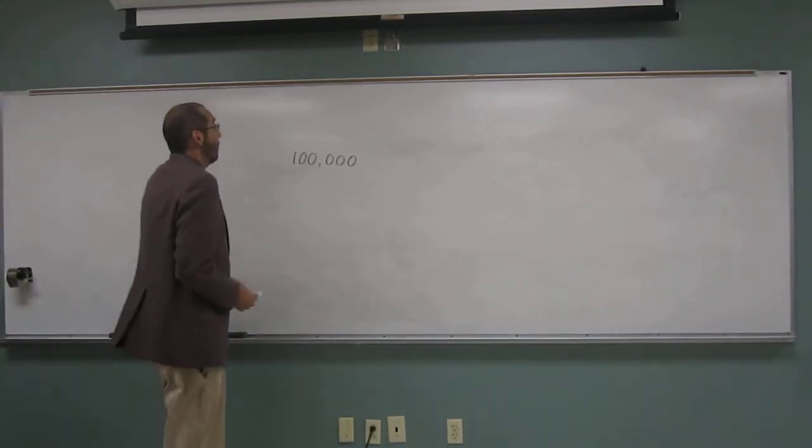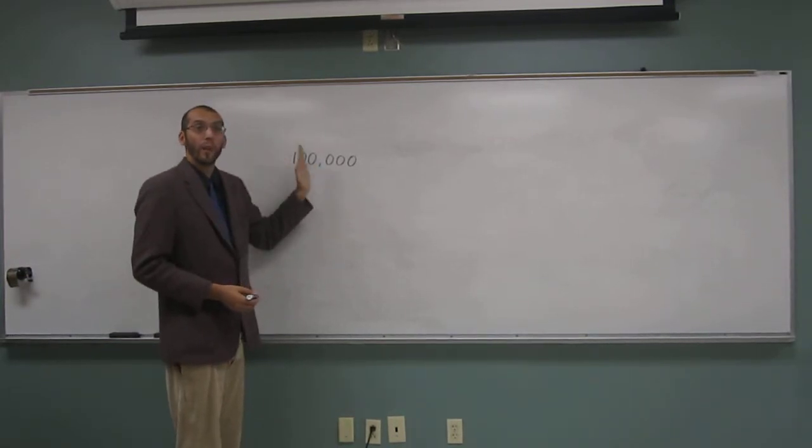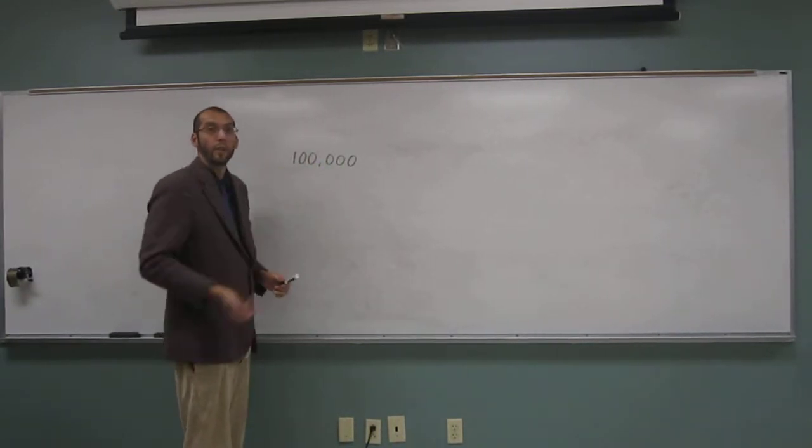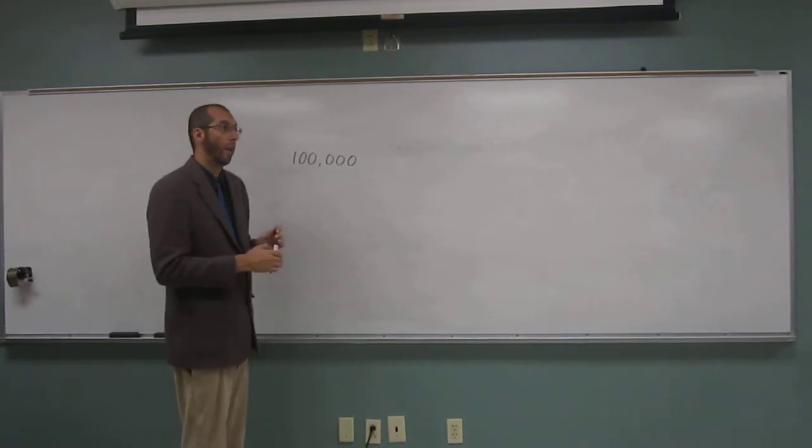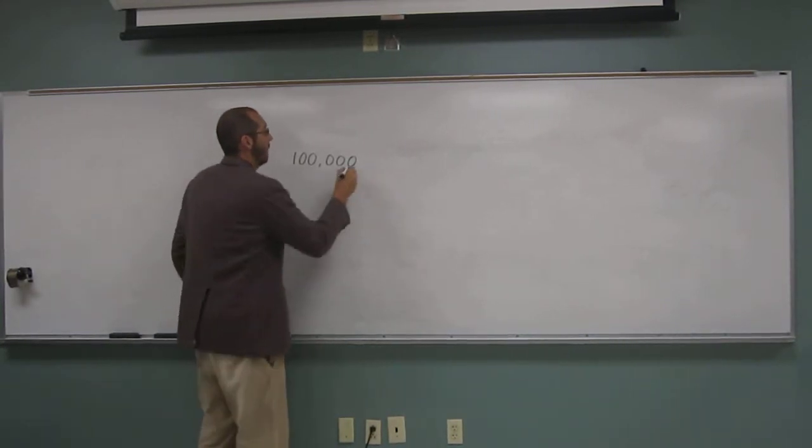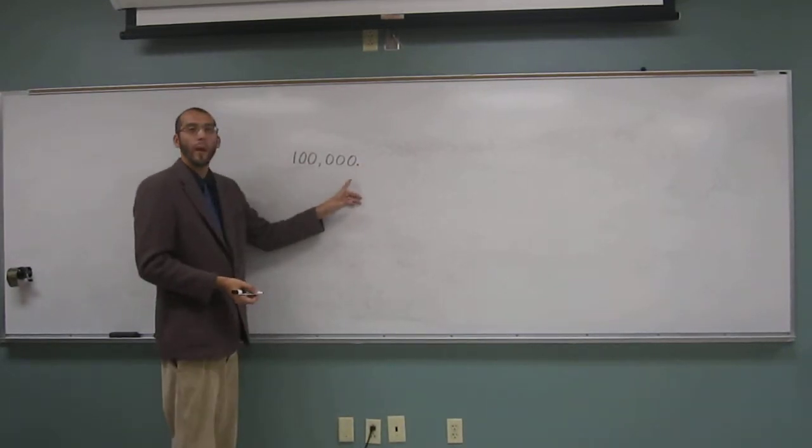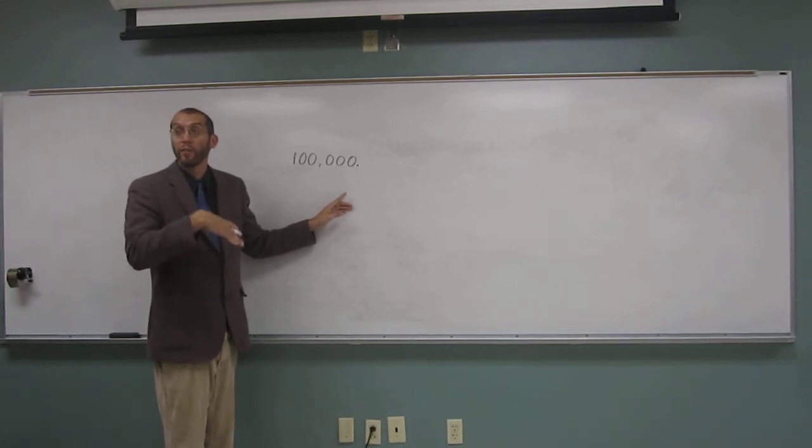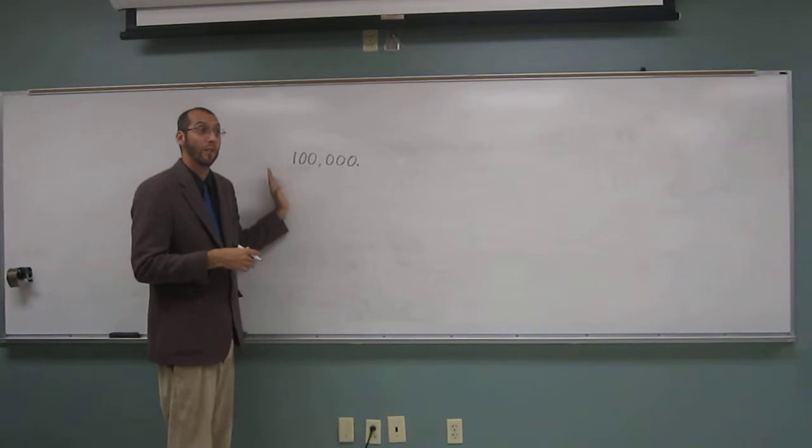But when we're putting this into scientific notation, we have to take note of those placeholder zeros, those placeholder trailing zeros, and use the decimal and move-over technique that we showed before. So we're going to put our pretend decimal there. And then move it to where in this one? After the first significant digit, right? To the left, definitely, but after the first significant digit.